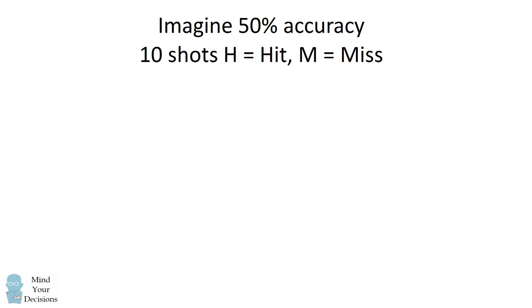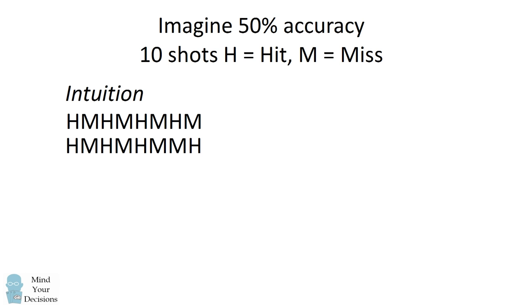For example, imagine a basketball player who has a 50% accuracy rate so that each shot is like a coin flip. If you ask people to predict the result of 10 shots, they will have about 5 shots being made and they'll alternate between hits and misses.